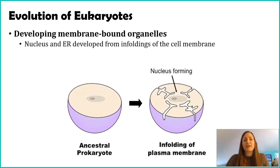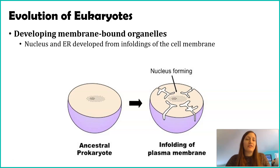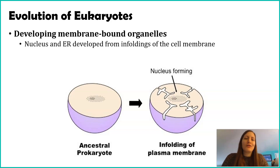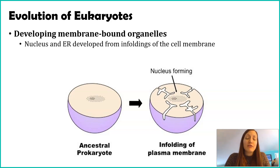The nucleus and the endoplasmic reticulum are surrounded by a plasma membrane in present-day eukaryotes, and in prokaryotes that's lacking. Scientists hypothesize that those areas of the cell became covered in a plasma membrane through infoldings of the cellular membrane.